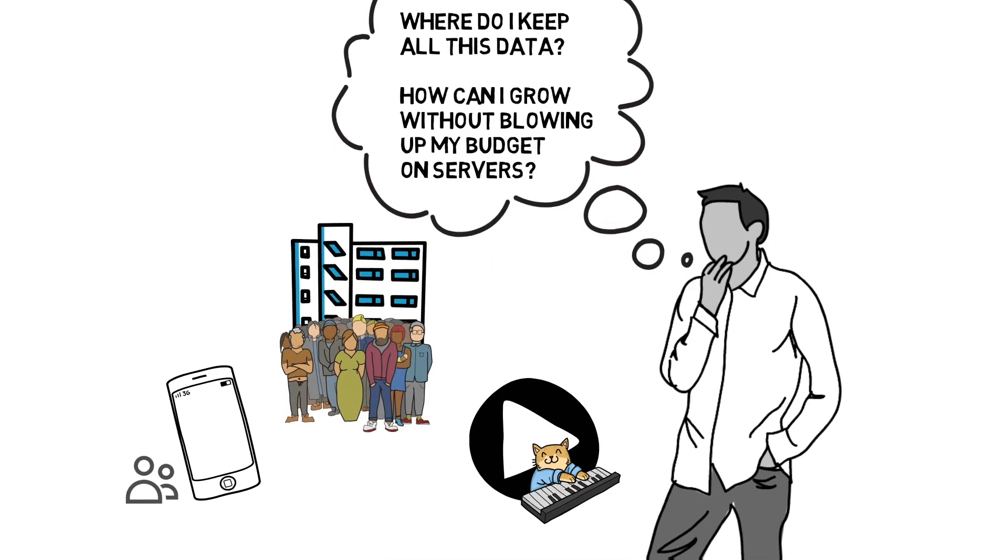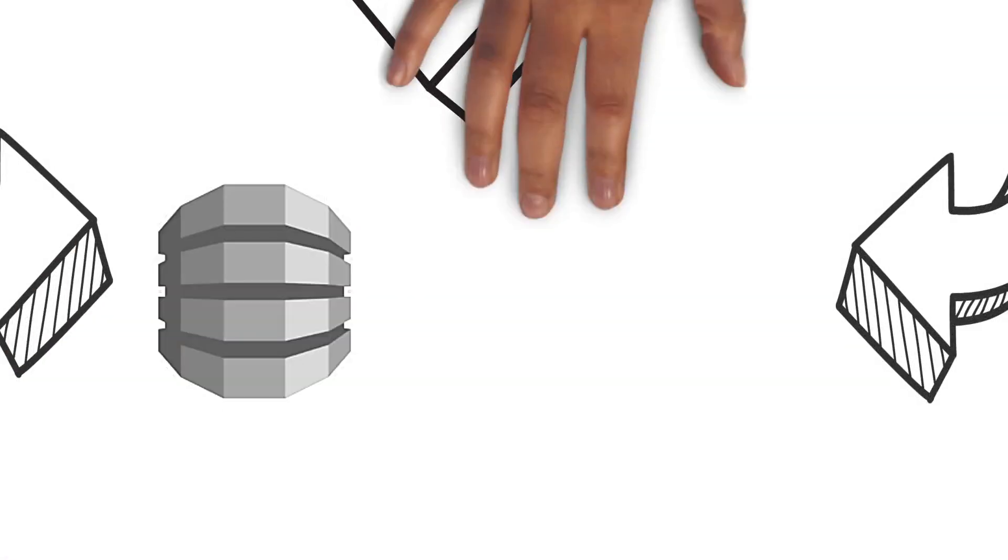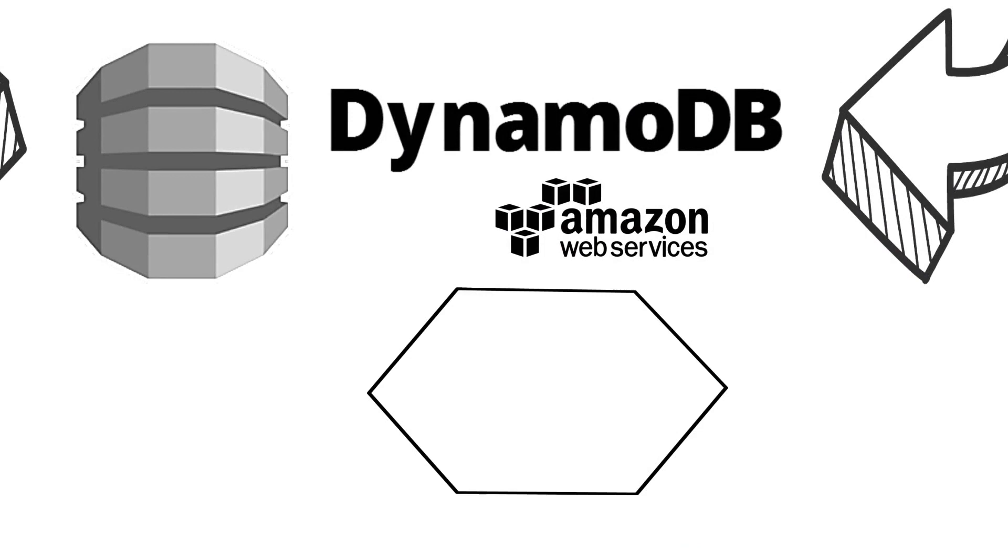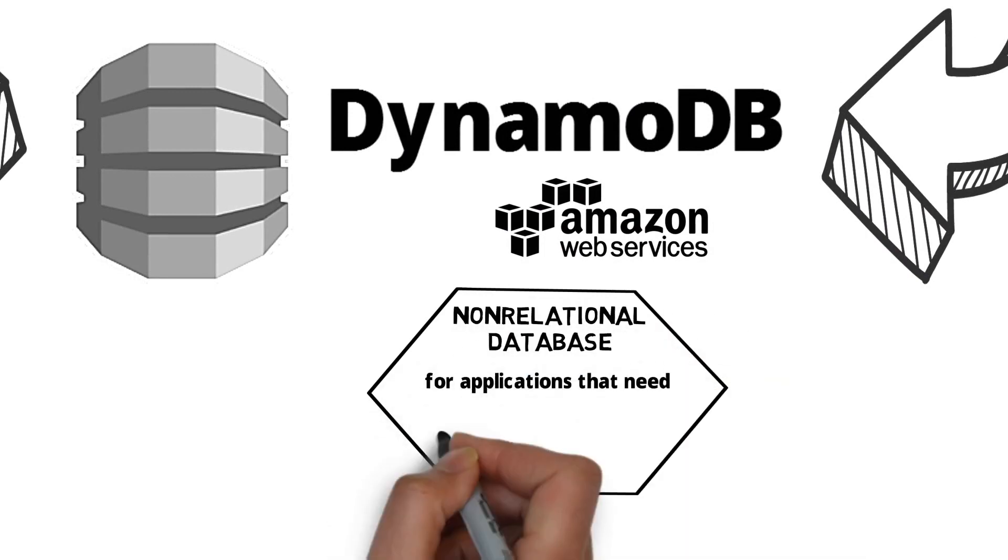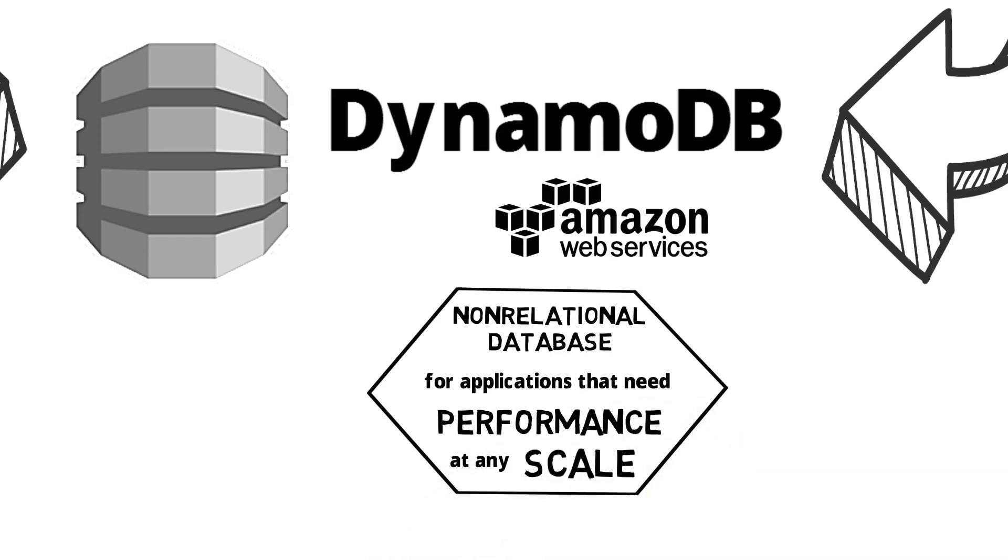Let's talk about a service provided by Amazon Web Services known as DynamoDB. DynamoDB is a non-relational database for applications that need performance at any scale.